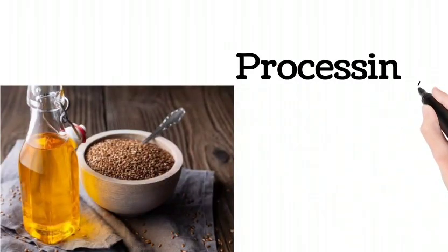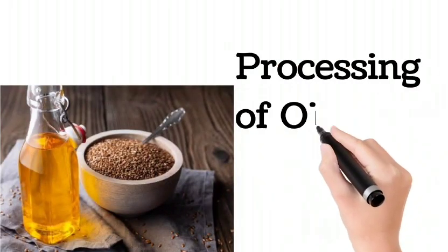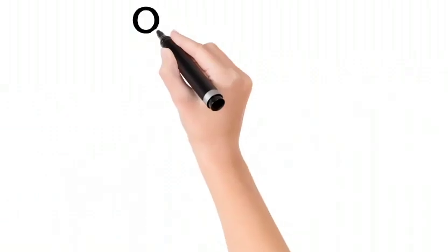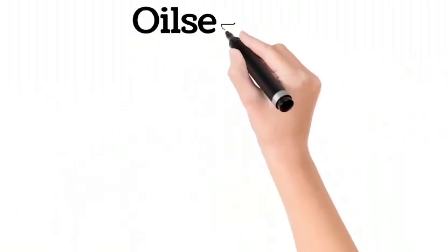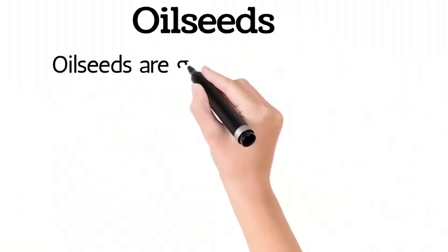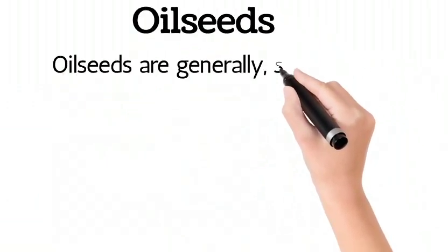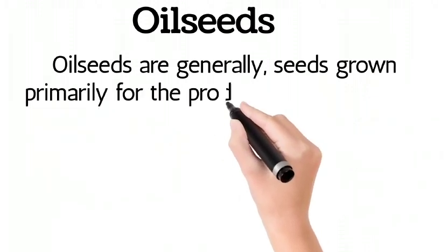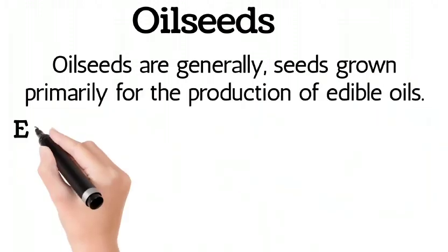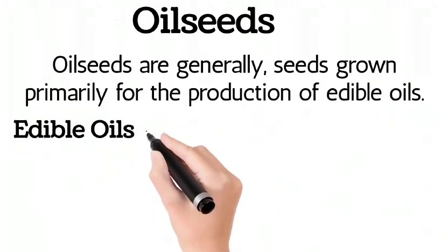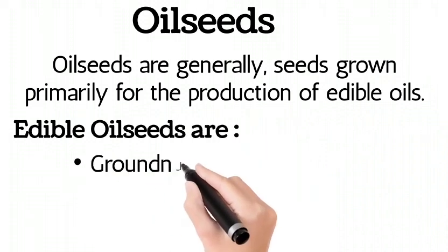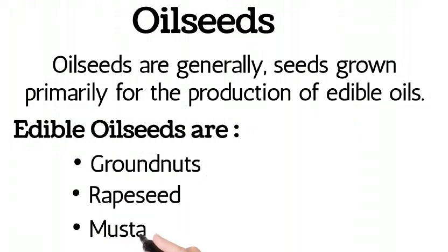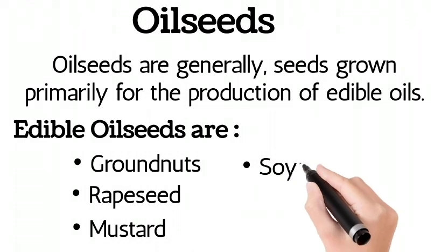Processing of oil seeds. Oil seeds are generally seeds grown primarily for the production of edible oils. Edible oil seeds include groundnut, rapeseed, mustard, soybean, sunflower, and sea salm.